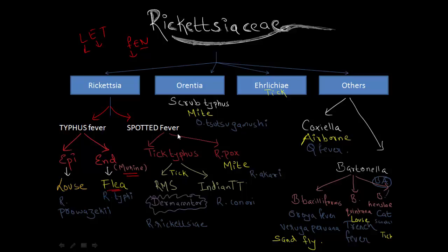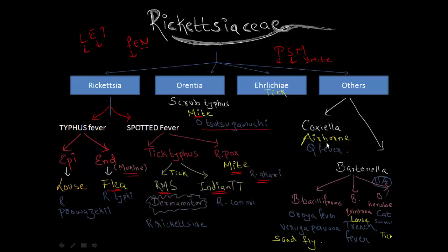Moving towards the spotted fever group, remember the two diseases which are transmitted by tick: Rocky Mountain spotted fever and Indian tick typhus. Indian tick typhus is also called Mediterranean fever or Boutonneuse fever. The vector for Rocky Mountain spotted fever is the Dermacentor tick and the agent is Rickettsia rickettsii. For Indian tick typhus, the agent is Rickettsia conorii. From the mnemonic PSM, the mite causes scrub typhus as well as rickettsial pox. The agent for rickettsial pox is Rickettsia akari and for scrub typhus is Orientia tsutsugamushi.